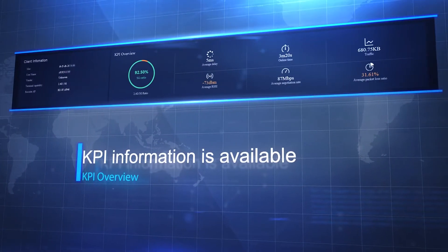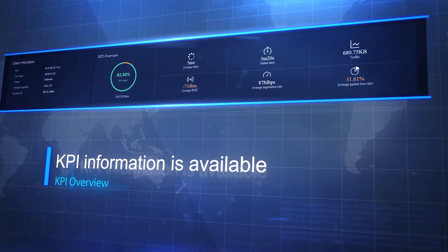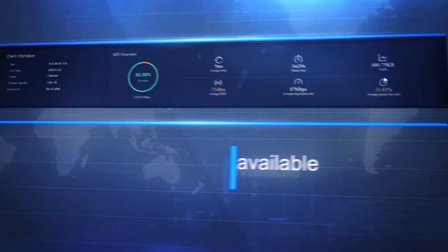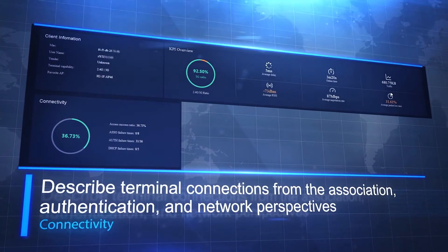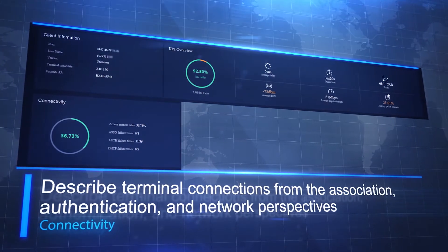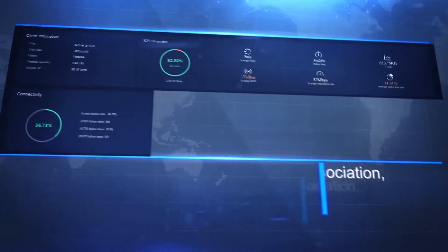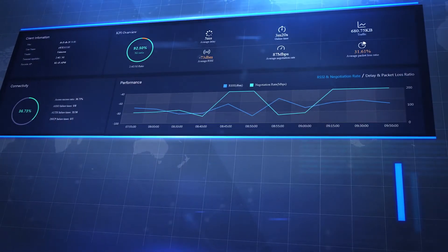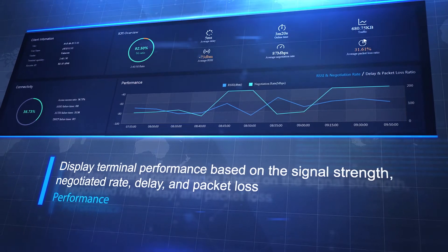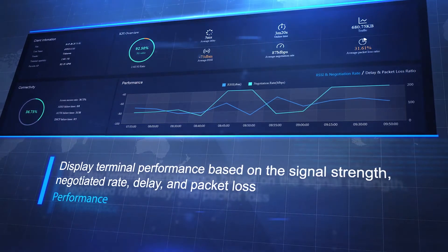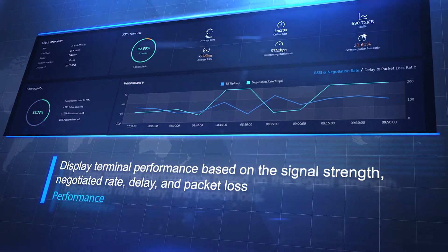KPI information is available. Terminal connections are described from the association, authentication, and network perspectives. Terminal performance is displayed based on signal strength, negotiated rate, delay, and packet loss.